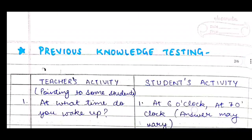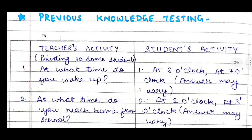Now, previous knowledge testing. Teachers' activity is in one column and students' activity in the next. The teacher puts up some questions before the topic starts to test previous knowledge, and students answer them. Pointing to some students, the teacher will ask: at what time do you wake up?